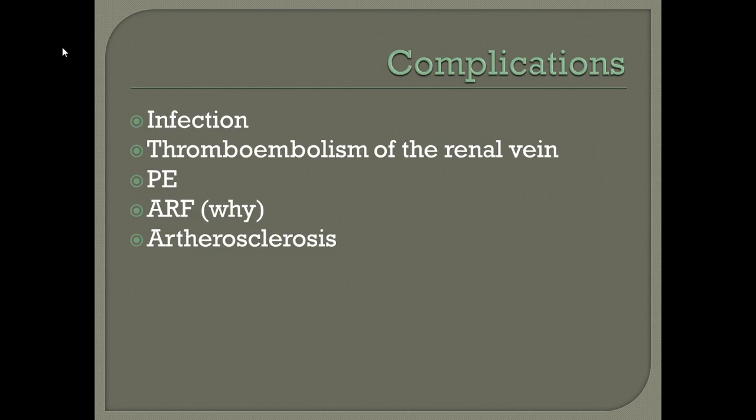Complications of nephrotic syndrome include infection, thromboembolism of the renal vein, pulmonary embolism, and acute renal failure or acute kidney injury. Acute renal failure can occur because periods of hypotension can lead to pre-renal failure, as well as from advanced atherosclerosis.